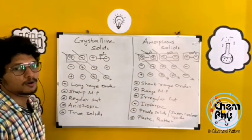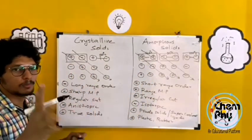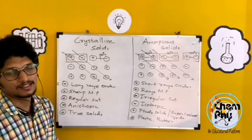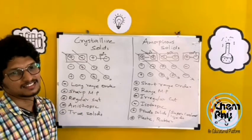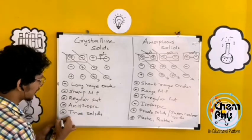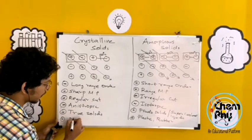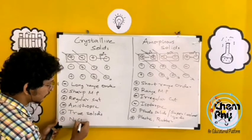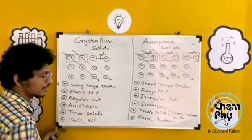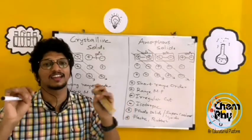Examples of amorphous solids include plastic and rubber. Examples of crystalline solids include NaCl, KCl, and quartz.